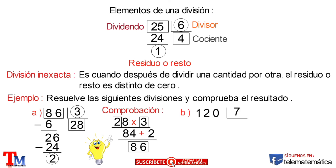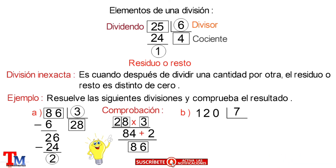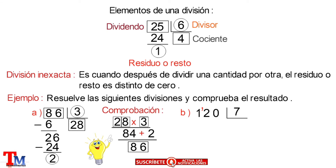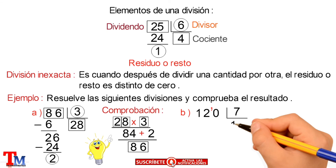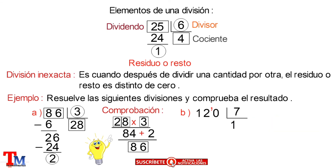Literal B: 120 dividido para 7. De forma similar, comenzaremos seleccionando la primera cifra de izquierda a derecha del dividendo, pero como esta es menor que el divisor, tomaremos la siguiente cifra, que sería el 2. Como este valor sí es mayor, buscamos un número que multiplicado por 7 se acerque al 12, que en este caso es 1. 1 multiplicado por 7 es igual a 7; lo ubicaremos debajo del 12 y restamos ambos valores, obteniendo como resultado 5.